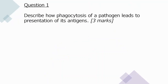Question one: describe how phagocytosis of a pathogen leads to presentation of its antigens. A phagosome is produced once the pathogen is taken inside the phagocyte. The phagosome fuses with a lysosome, exposing the pathogen to lysozymes, which are hydrolytic enzymes. The lysozymes destroy the pathogen, and the antigen from the pathogen is then displayed on the cell membrane of the phagocyte.